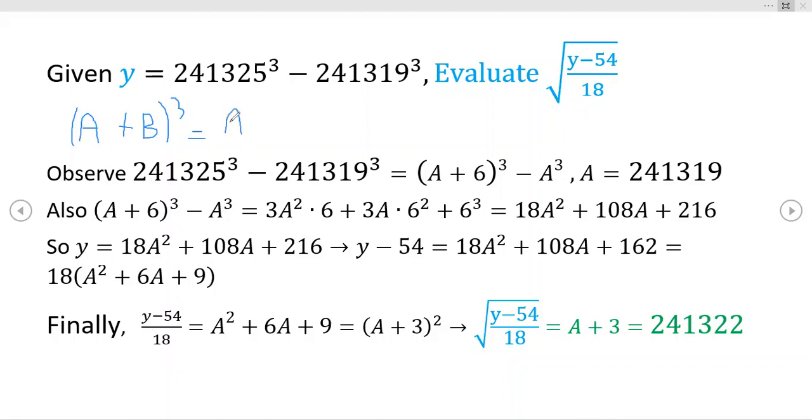But we have a cubed plus three a squared b, and this is an identity. It holds for complex numbers, integers, real numbers. So it is an algebraic identity. Three a b squared, and finally, b cubed.